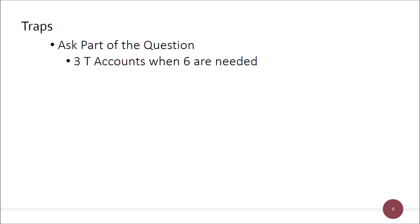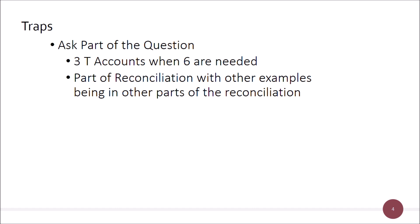So trap number one is: the examiner gives you the data, you need to do the whole question, but they only ask you part of it — to see whether you want to shortcut. They give you way more time than you need; you could do all six T-accounts, probably even twelve if you felt like it. But they're testing whether you'll feel pressure and try to shortcut, abandoning proper solid accountancy to invent something new. If you invent something new, you'll get it wrong.